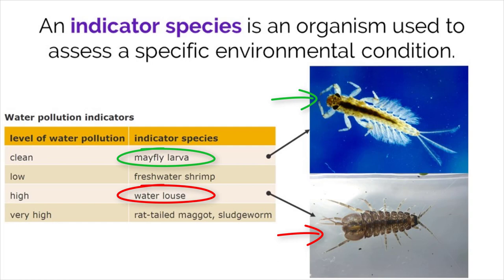Therefore, if ecologists find mayfly larvae in an aquatic ecosystem, it is an indicator that the water is clean and not polluted. These species are very useful to inform ecologists about the level of toxicity in environments.